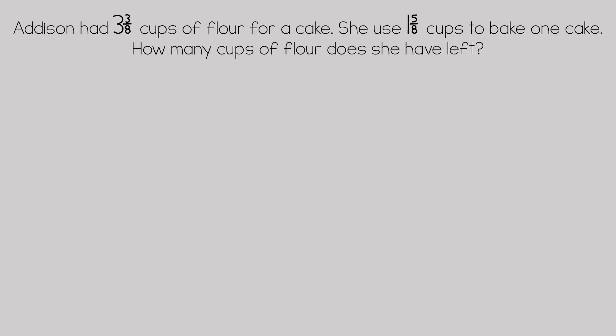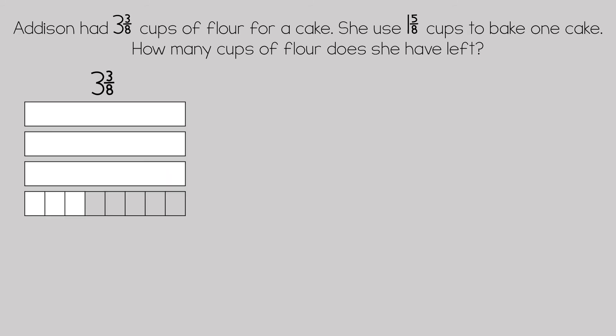Addison had three and three-eighths cups of flour for a cake. She uses one and five-eighths cups to bake one cake. How many cups of flour does she have left? Let's represent three and three-eighths using a bar model. We can see there are three wholes and three out of eight pieces are shaded, and we want to take away one and five-eighths cups.